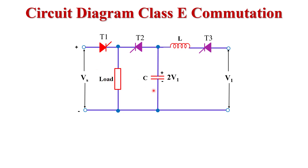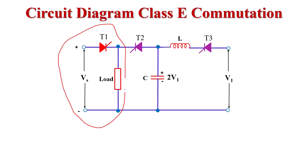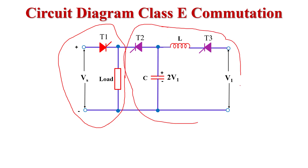This circuit is divided into two parts. The first part is the main circuit, where the main thyristor, main voltage source, and load are connected. The second part is the commutation circuit, through which we generate an external pulse and turn off the main thyristor T1.